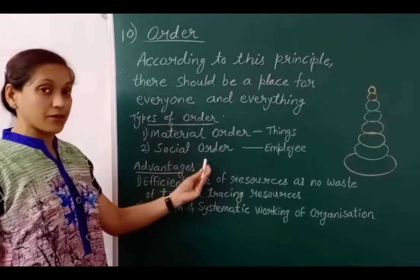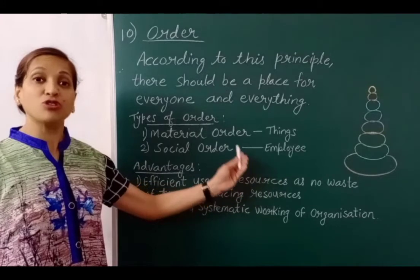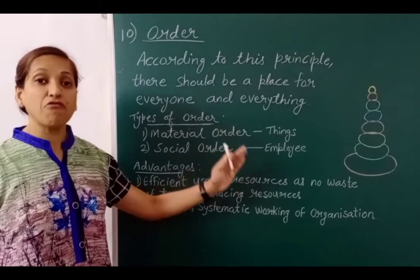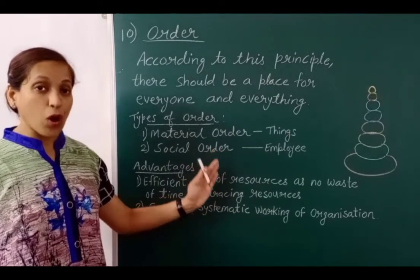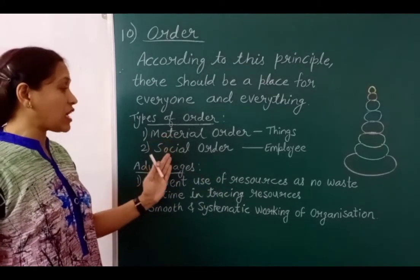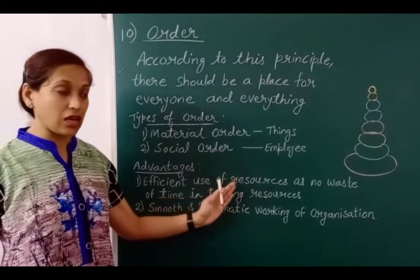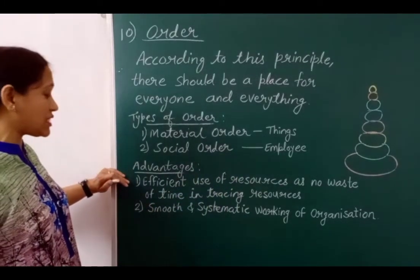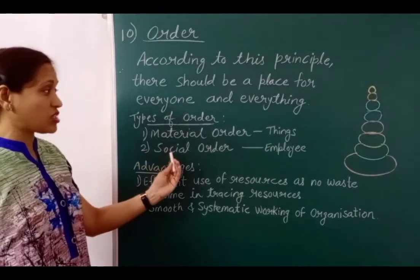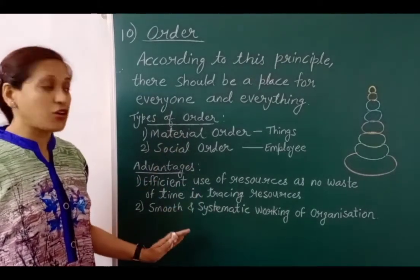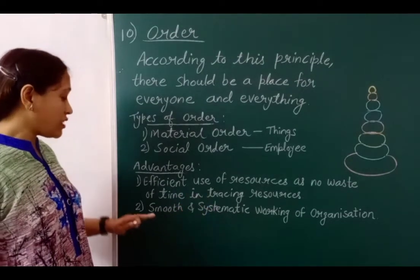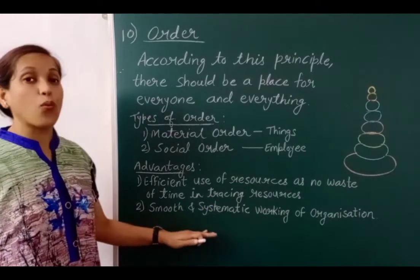The second type is social order, which means employees — for example, a manager should be in his cabin and a foreman should be in the workshop, so that when needed we can easily meet either the manager or foreman. According to Fayol, to increase efficiency and productivity, both material and social order should be followed in any organization. The advantages are: efficient use of resources with no waste of time in finding resources, and smooth and systematic working of the organization.